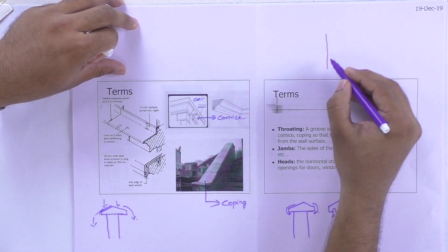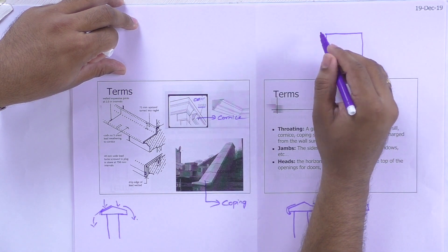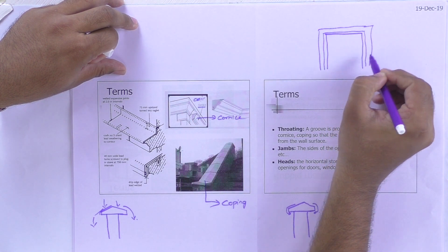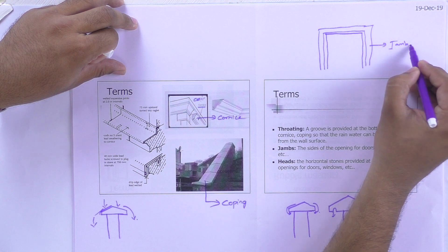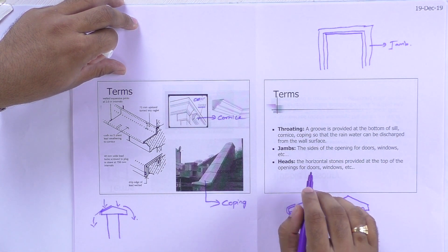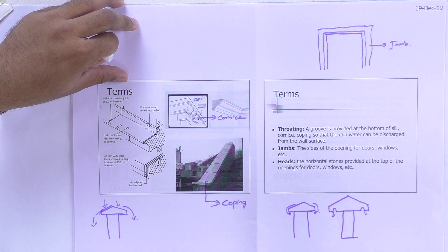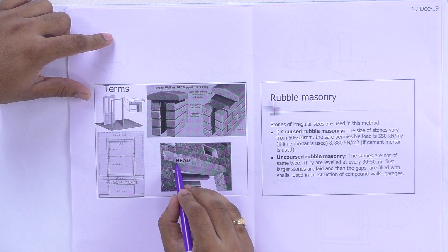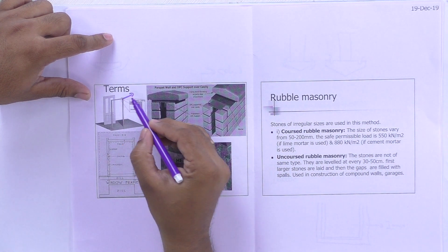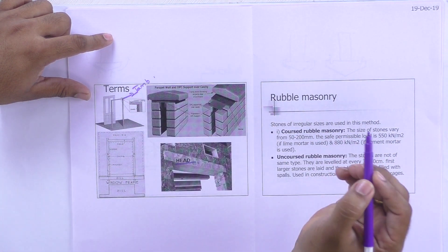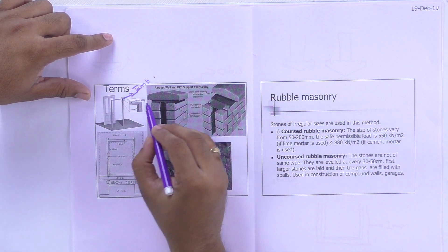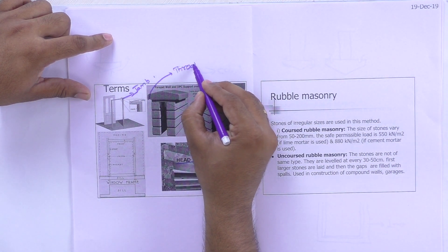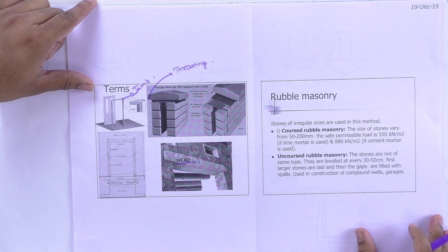Jam refers to the sides of openings for doors, windows, etc. — the outer frame we provide in all such areas. Head refers to the horizontal stones provided at the top of openings for doors and windows. You can see here: this one is the head, this one is the jam, and the groove projection here is the throating.